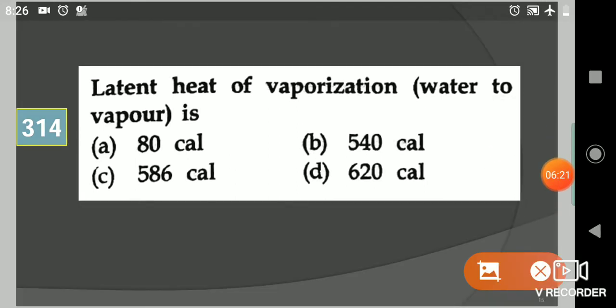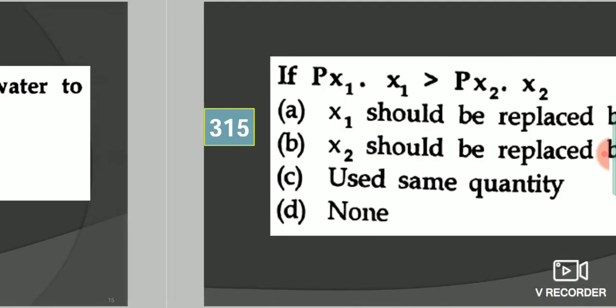Next question: Latent heat of vaporization water to vapor is? Your options are 80 calorie, 540 calorie, 586 calorie, or 620 calorie. Your answer is 586 calorie.